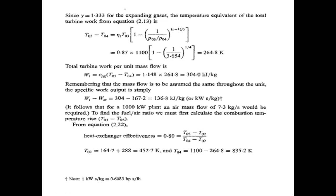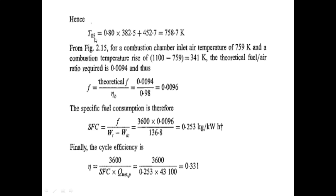With T_02 = 288 + 164.7 ≈ 453 K and T_04 = T_03 minus 265 = 1100 minus 265 = 835 K, and heat exchanger effectiveness of 0.80, we can solve for T_05. Substituting: 0.80 = (T_05 minus 453)/(835 minus 453), giving T_05 approximately 759 Kelvin.